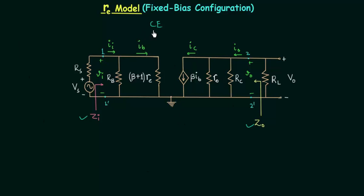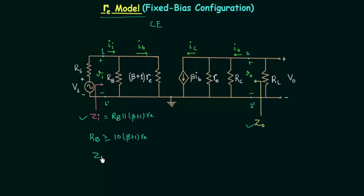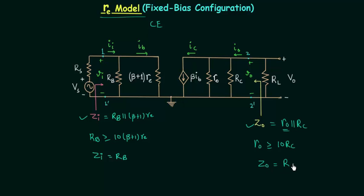We obtained this circuit from common emitter fixed bias configuration by first obtaining the AC equivalent circuit and then replacing the transistor with its RE model equivalent. We calculated Zi, the input impedance, equal to RB in parallel with (β+1)RE. If RB ≥ 10(β+1)RE, then Zi = RB. The output impedance is RO in parallel with RC. If RO ≥ 10RC, we can neglect RO, so the output impedance equals RC.